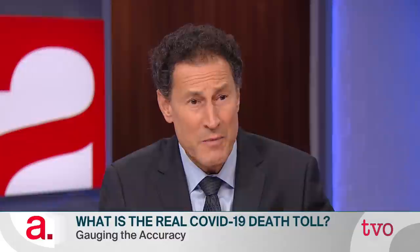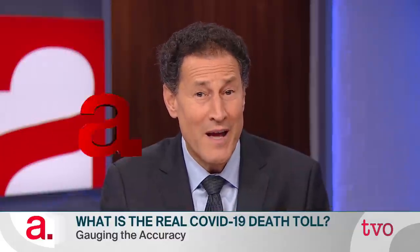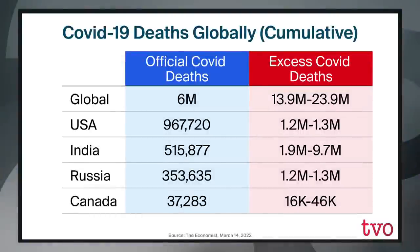Let's bring the chart up one more time, focusing on Russia this time. Sondra, four countries down — Russia: 353,000 and change official deaths, and then a wildly divergent number of much more than a million, between 1.2 and 1.3 million, for excess COVID deaths. Can you give us some understanding of why these numbers would be so divergent?